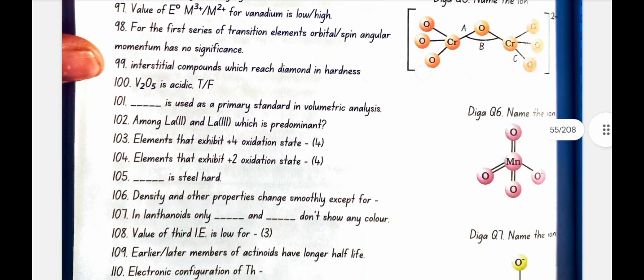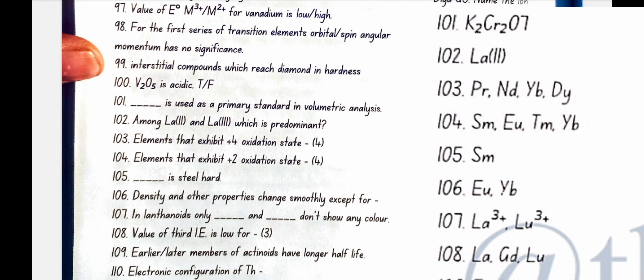For the first series of transition elements orbital angular momentum has no significance. Interstitial compounds which reach diamond in hardness are borides. V2O5 is acidic. No false, it is amphoteric.